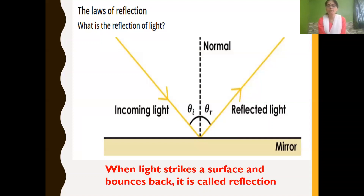Light rays together are called a beam of light. When the beam of light falls on the surface of a mirror, we call it the incident ray — that is, the incoming light. The point where it strikes the surface is called the point of incidence. After it strikes the mirror, it gets reflected back; this ray is called the reflected ray.